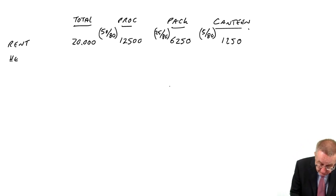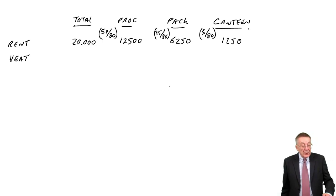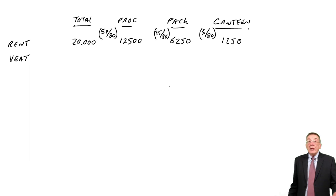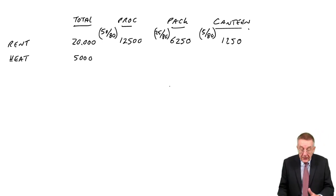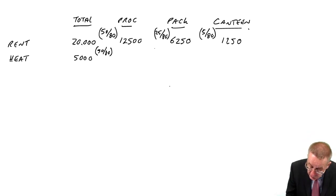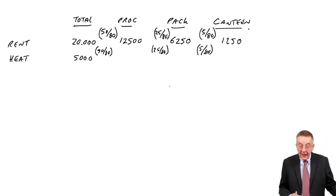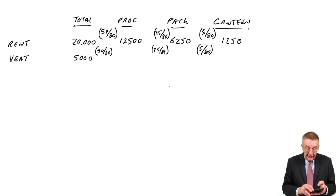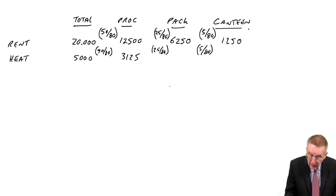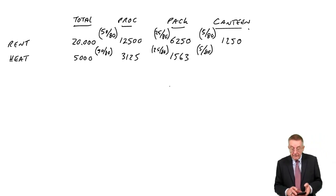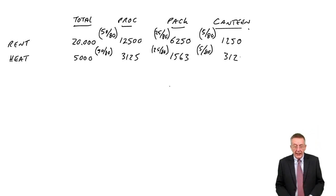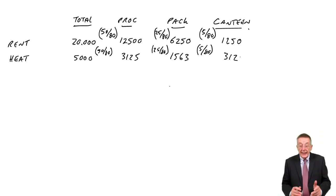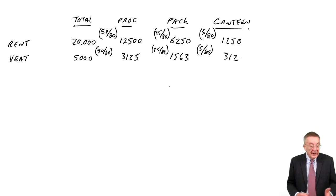What about factory heat? In real life there might be better ways of splitting it, but surely the only sensible one is again to do it on cubic space. There's 5,000 in total, so 50/80ths to processing gives 3,125; 25/80ths to packing gives 1,563. In this sort of exercise, do it to the nearest dollar. 5/80ths to canteen gives 312. We're not worried about a dollar rounding either way. Those two — rent and heat — we were apportioning based on space.